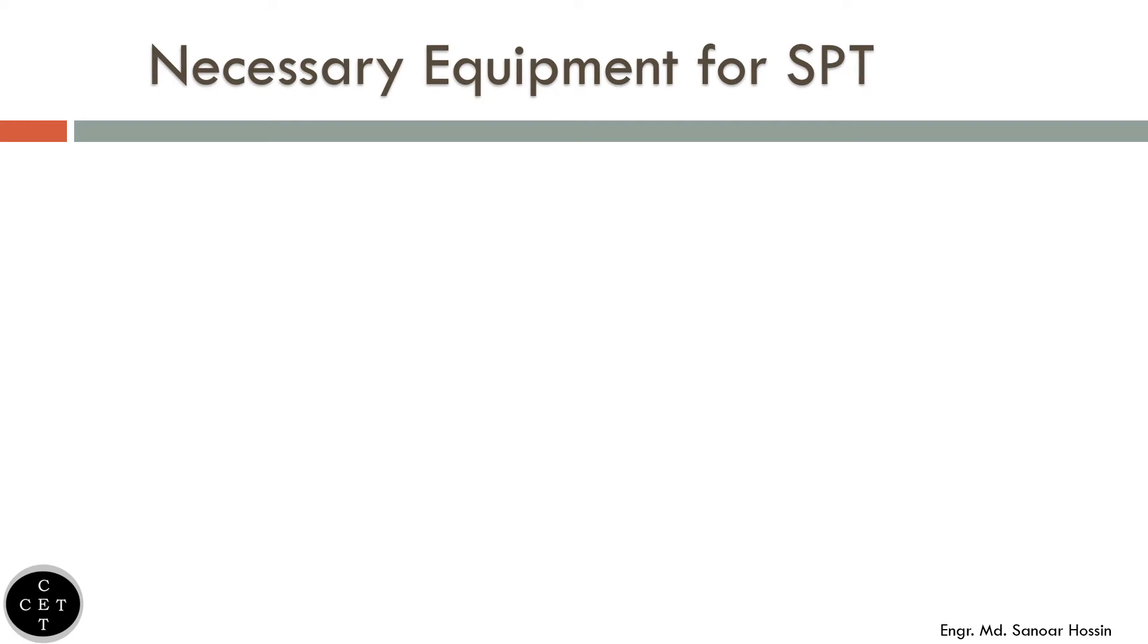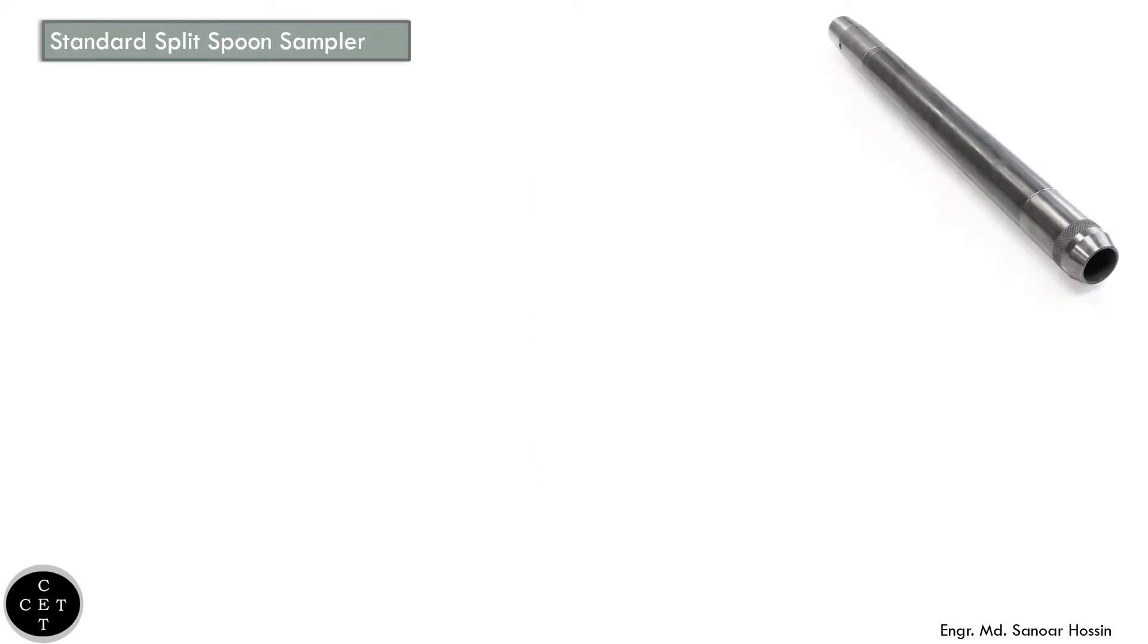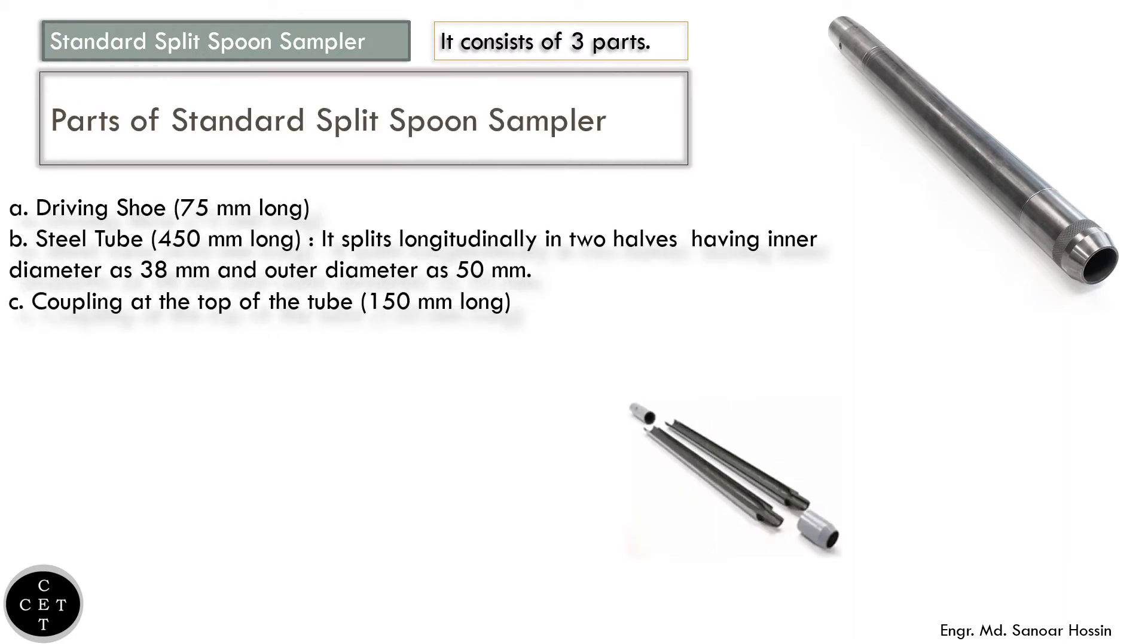Now let's talk about the equipment necessary for Standard Penetration Test: a tripod stand, standard split spoon sampler. It consists of three parts: driving shoe 75 millimeters long, steel tube 450 millimeters long that splits longitudinally in two halves having an inner diameter of 38 millimeters and outer diameter of 50 millimeters, and coupling at the top of the tube 150 millimeters long.